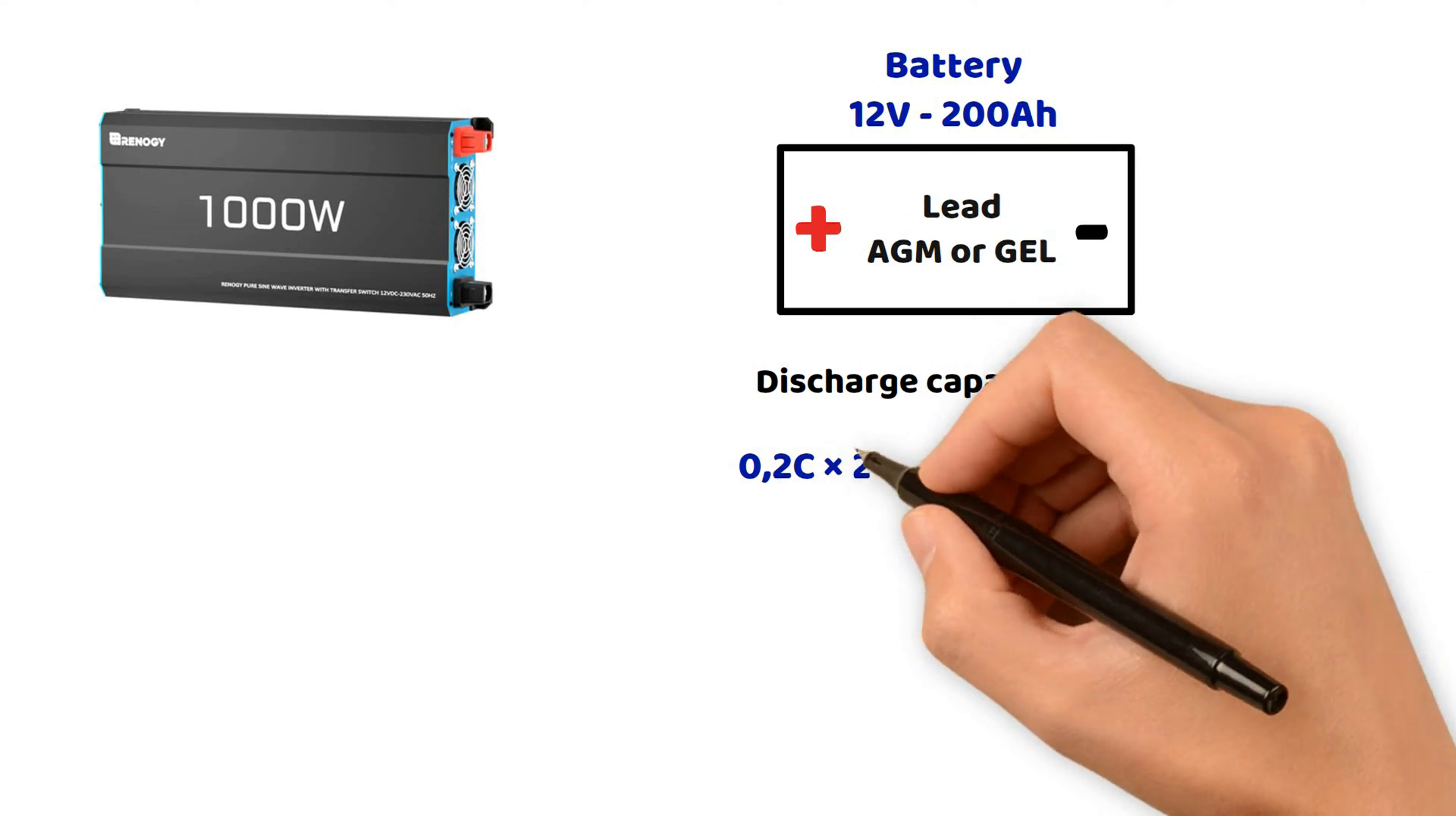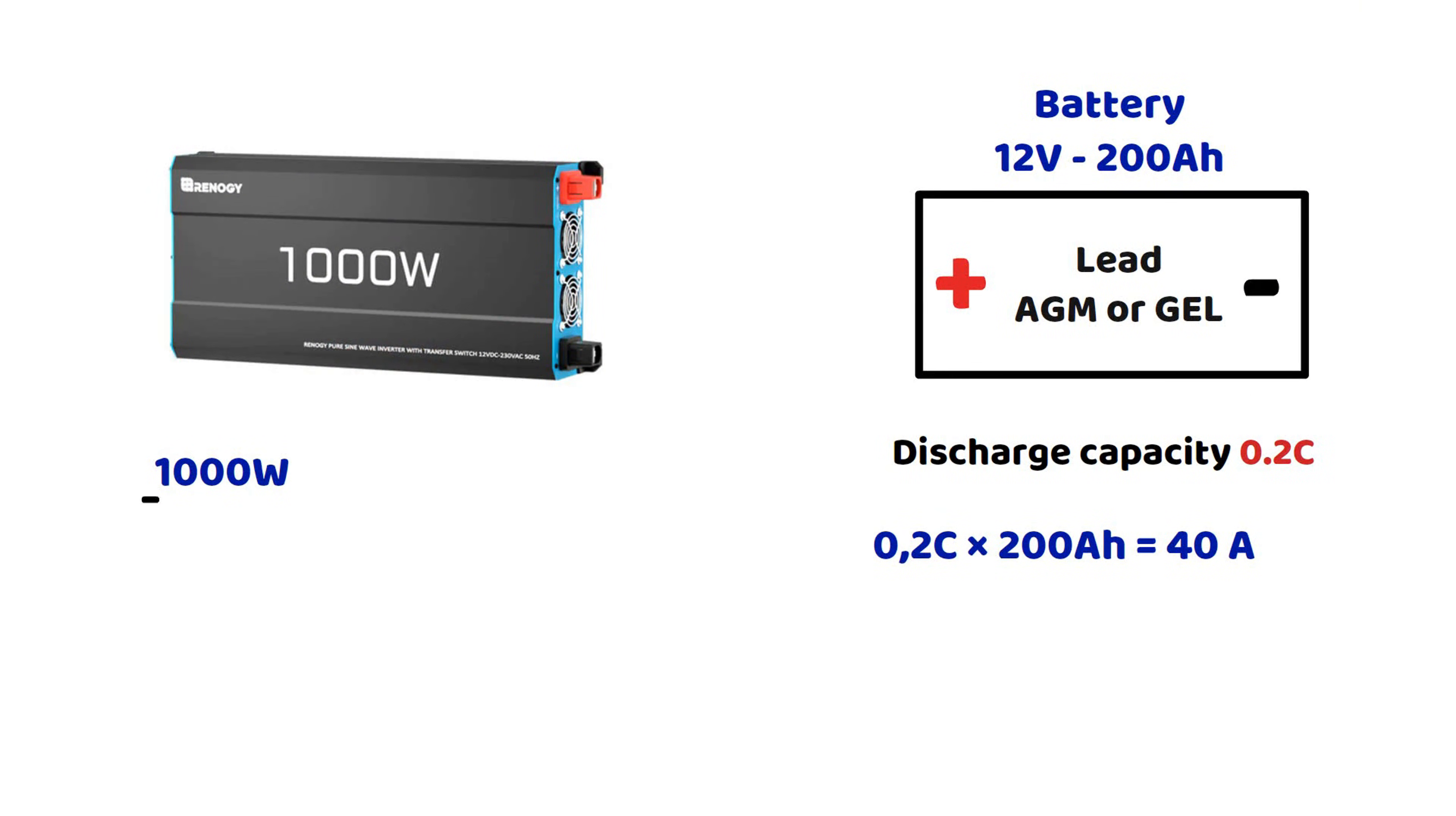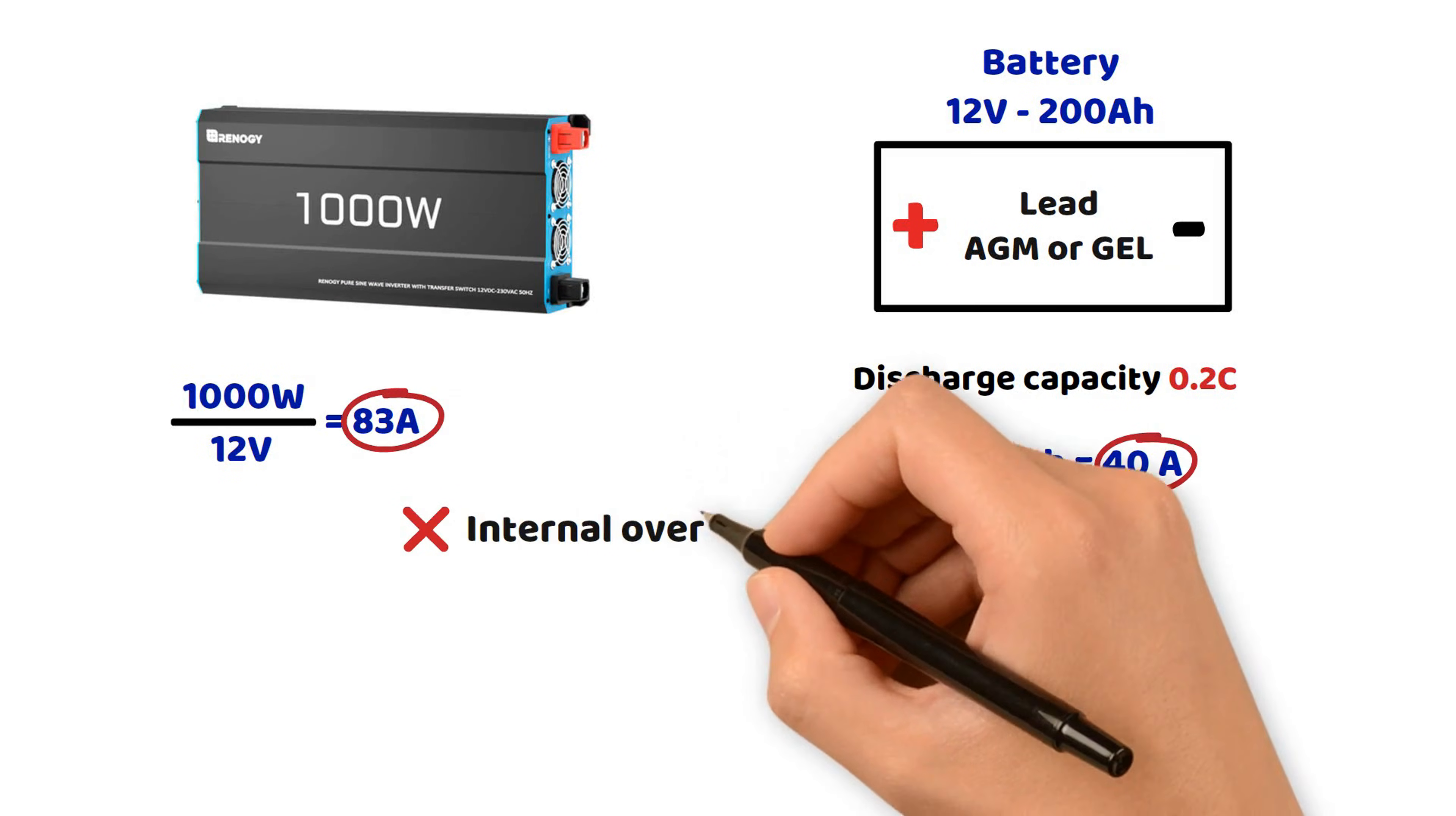However, a 1000 watt inverter running on 12 volts requires approximately 1000 watts divided by 12 volts, which equals around 83 amperes. The battery will therefore be pushed to more than twice its recommended discharge capacity. This can cause internal overheating, reduced lifespan, especially a drop in performance, and eventually a significant loss of capacity.